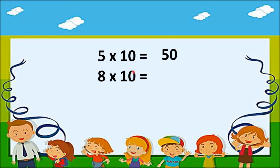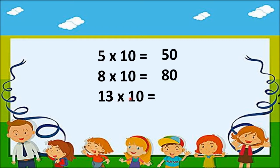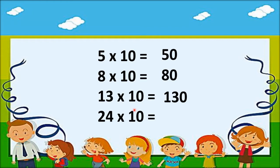Next is 8 multiplied by 10. So 8 zeros are 0 and 8 ones are 8. Next is 13 multiplied by 10: 13 zeros are 0 and 13 ones are 13. Next is 24 multiplied by 10: 24 zeros are 0 and 24 ones are 24. So our answer is 240.